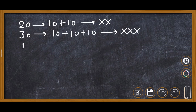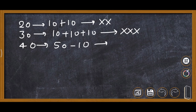For 40, we cannot write X four times because that would be meaningless. So we write it as 50 minus 10. In subtraction, the smaller symbol comes first, and since 50 is L, it becomes XL.